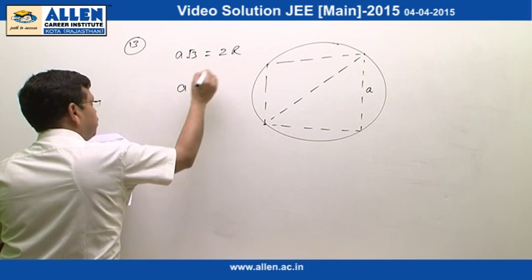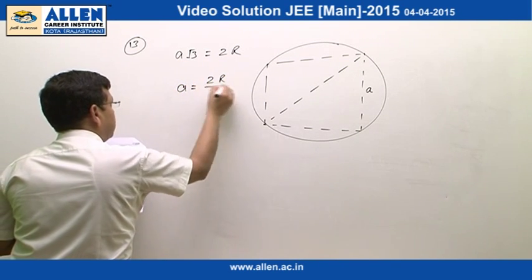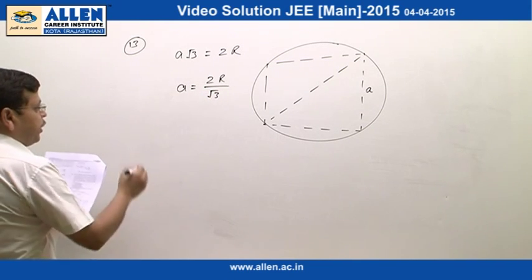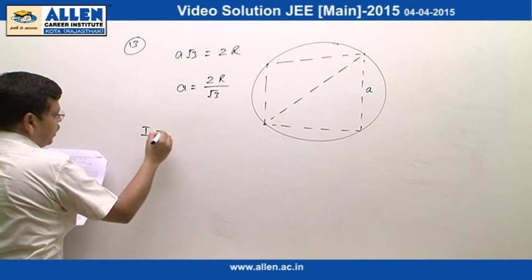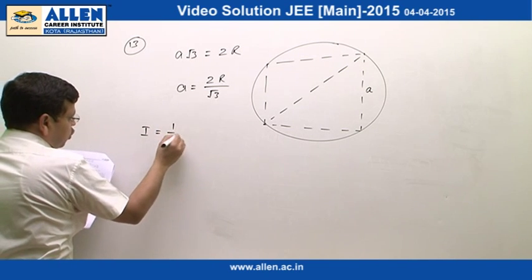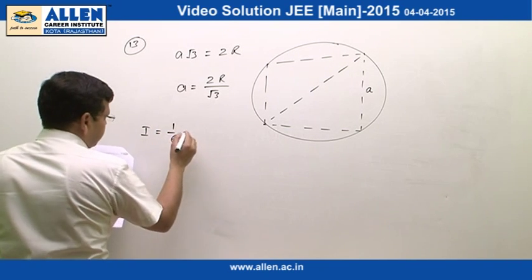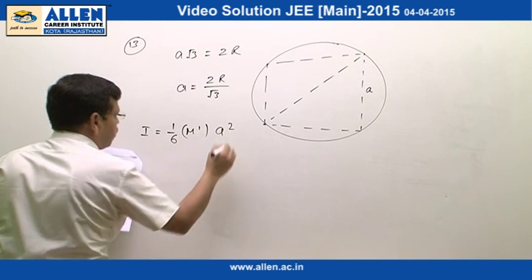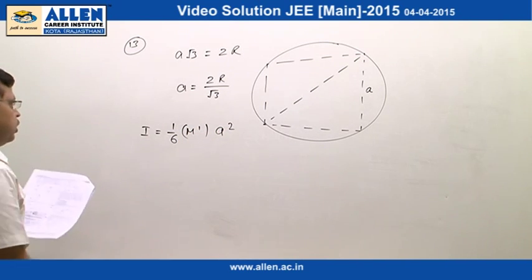From here, we will get the side of cube which is 2R by root 3. Now, moment of inertia of this cube about given axis is going to be equal to I equals 1 by 6 into m dash into A square, where m dash is the mass of the cube.